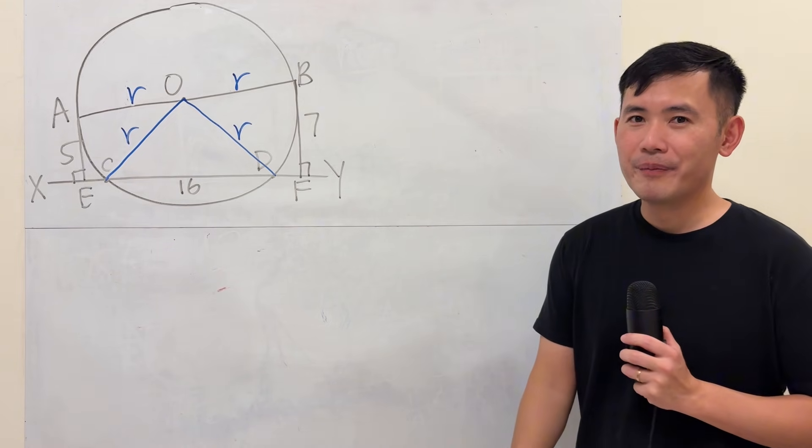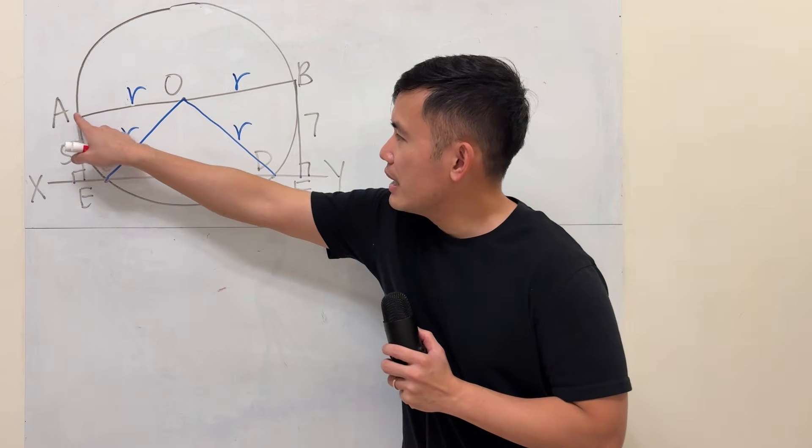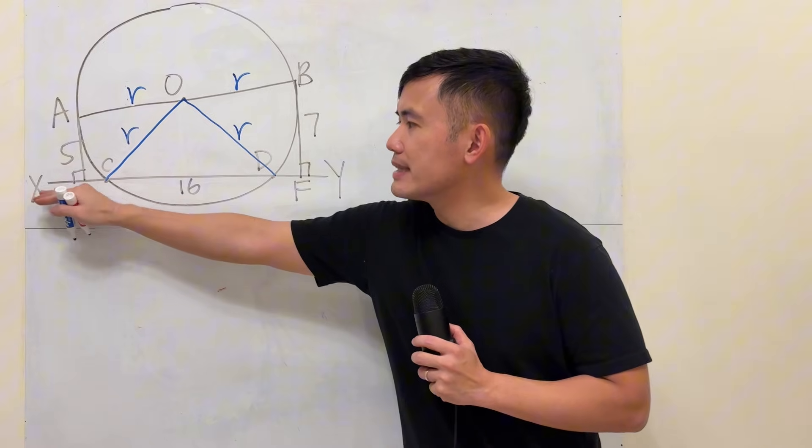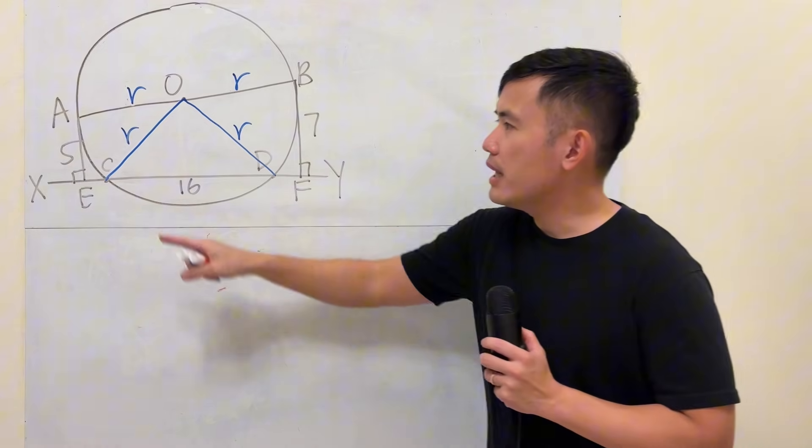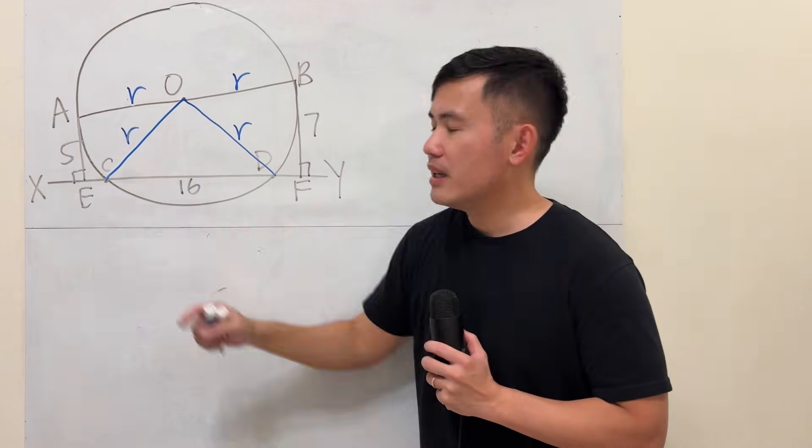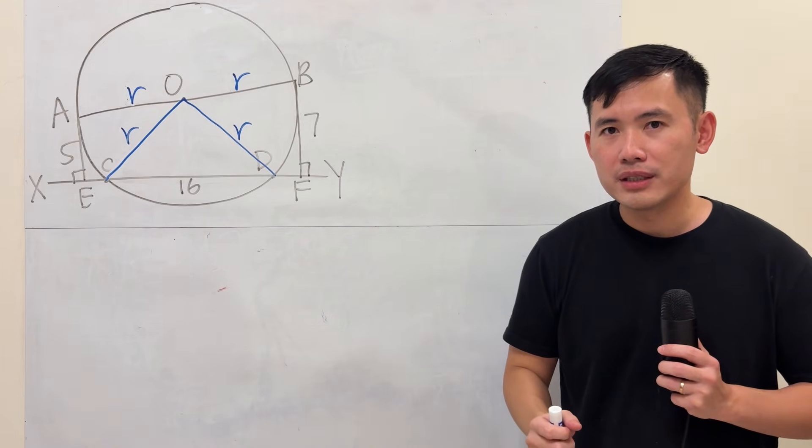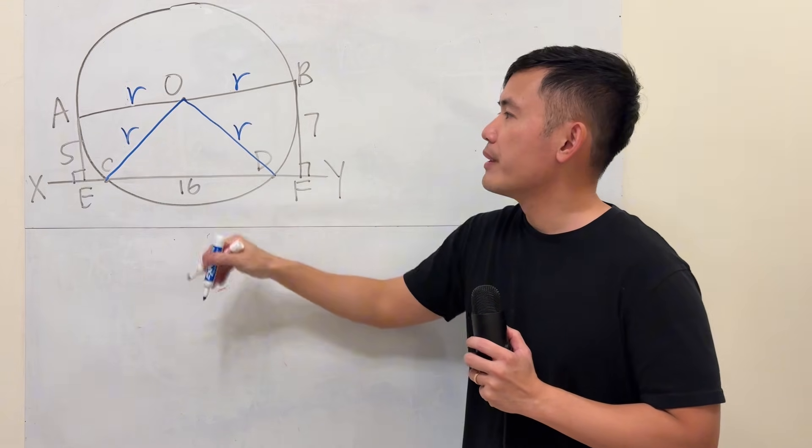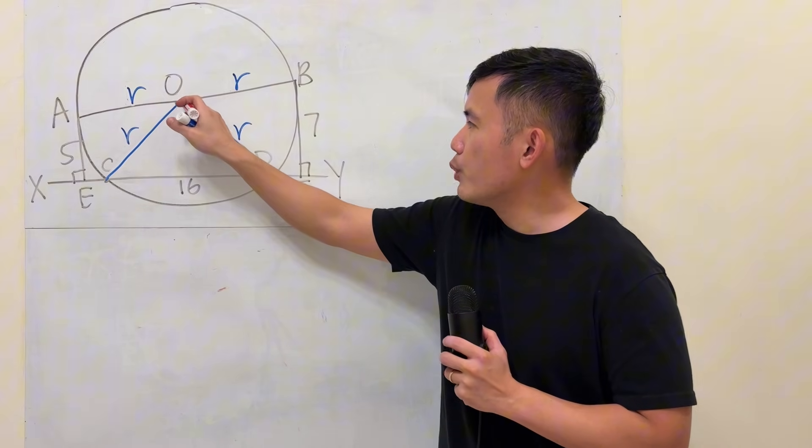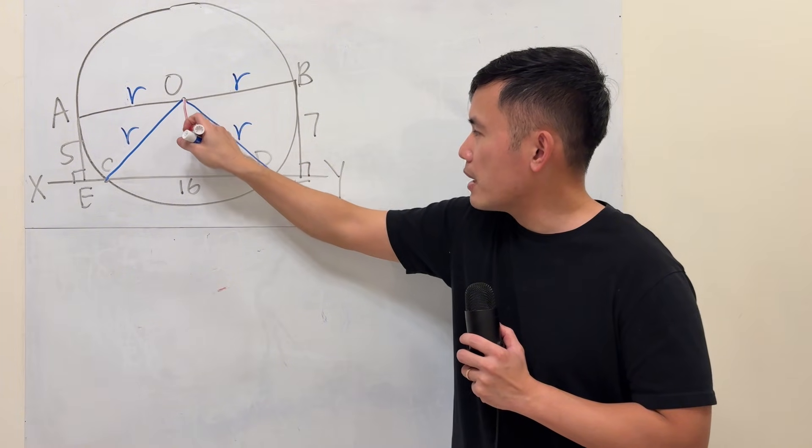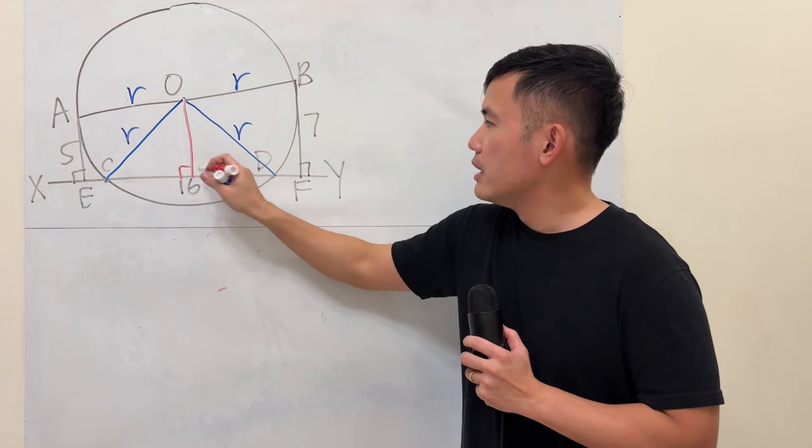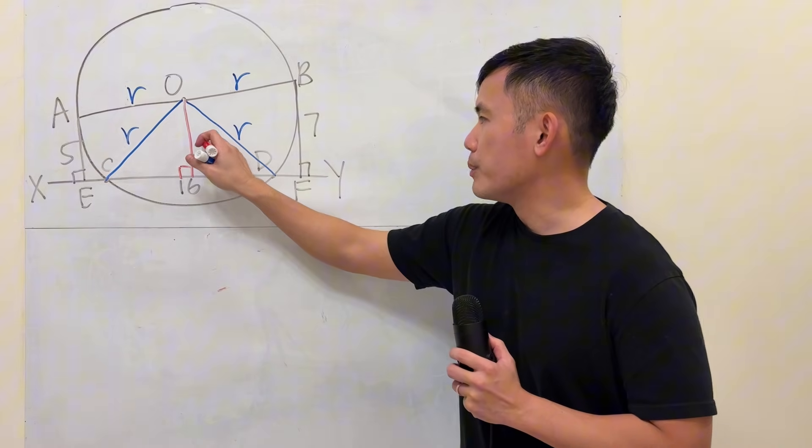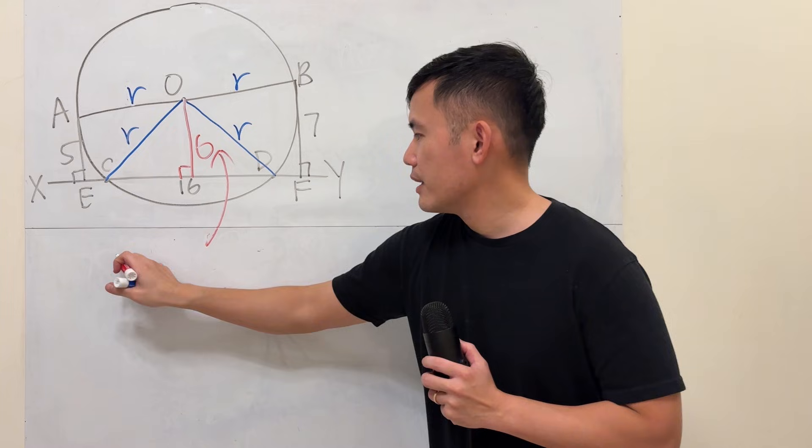What do we do next though? The key right here is that notice that AE and BF, they are both perpendicular to XY. So if you look at ABFE, that's actually a trapezoid. And very nicely, because this and that they are both r, so they are equal. So if you go from the middle, which is at the center of the circle, if you also drop down perpendicular, this length will just be the average of 5 and 7, so that would be 6.